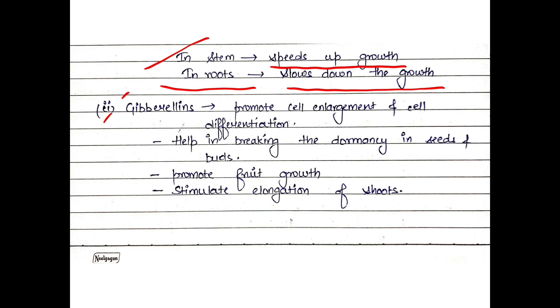Next is Gibberellin. Gibberellin promotes cell enlargement and cell differentiation, but it has another function: breaking of dormancy in seeds. Dormancy means there is no metabolic activity in the seed. Gibberellin breaks the dormancy so that a new plant bud emerges. Gibberellin also promotes fruit growth and stimulates elongation of shoots, especially lateral growth. So Auxin is for vertical growth and Gibberellin creates lateral growth.